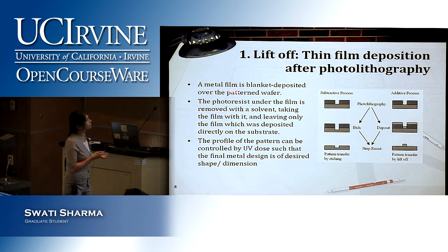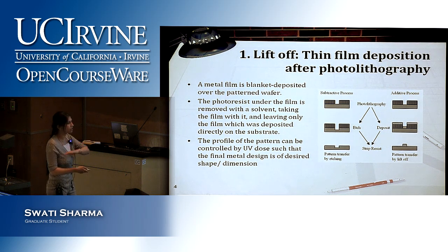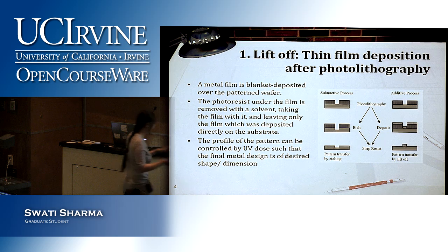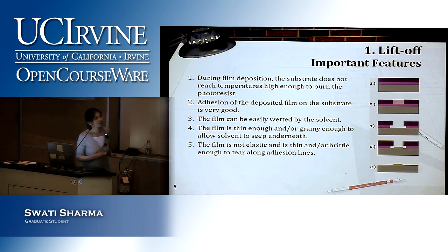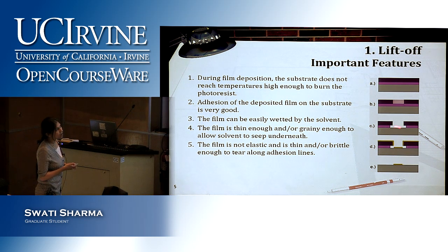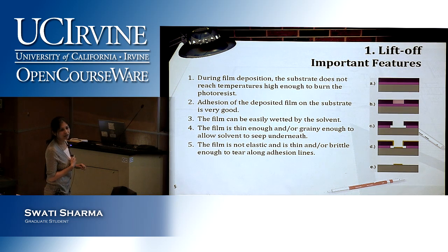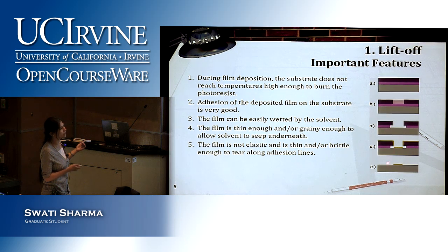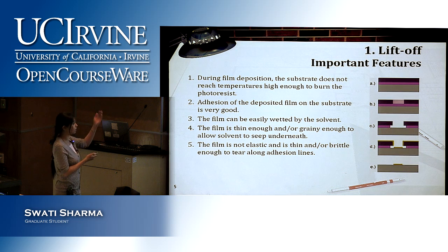We need to control the UV dose in order to make a photoresist pattern that avoids the problem of tearing off the film. One way is to create an undercut: on a silicon wafer with a silicon dioxide layer, you etch the silicon dioxide so that there is an undercut. When there is an undercut, the deposited film is not connected across the gap, so when you dissolve the resist the film breaks cleanly along the edges.